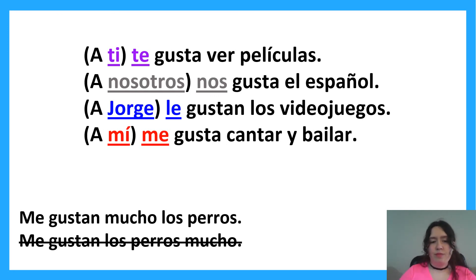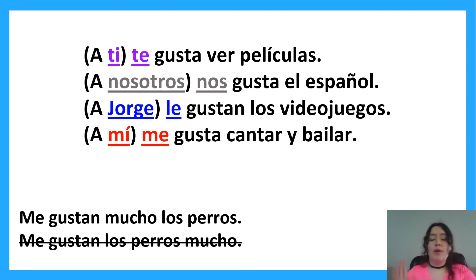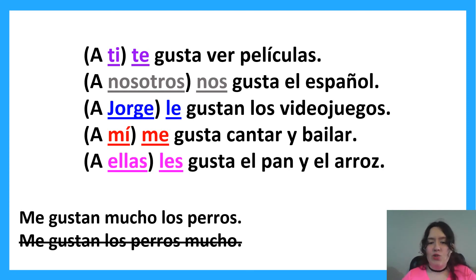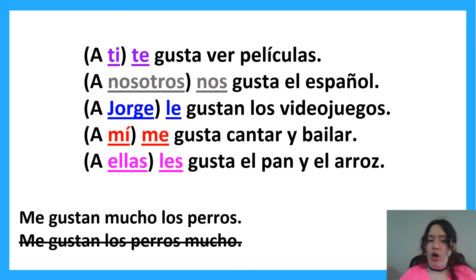'Me gusta cantar y bailar' — I like to sing and dance. Two verbs — it doesn't matter. The fact that right after 'me gusta' comes a verb automatically makes it 'gusta.' Then, 'a ellas les gusta el pan y el arroz.' Even though two nouns are mentioned, what comes directly after is a singular noun, so we use 'gusta.' They like bread and rice.